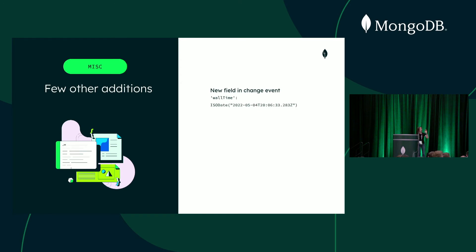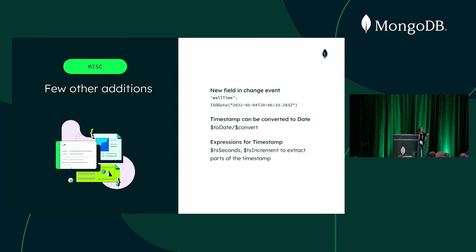A few other additions: in 6.0, we now include the wall time field in change streams — basically the same wall field from the oplog, containing the timestamp in date format with millisecond precision. This may help if you want to parallelize change stream events and bring them back in the right order. You can also extract pieces of the timestamp — the seconds part and the increment part — useful if you want to split change streams by time, for example using modulo arithmetic to route every third event to a different stream.